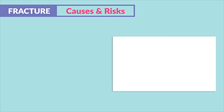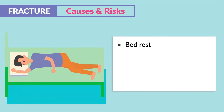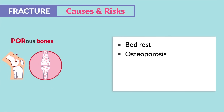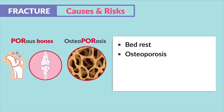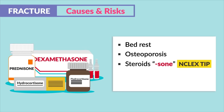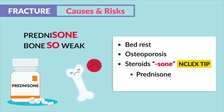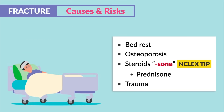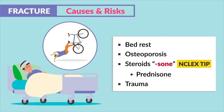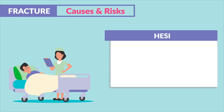For causes and risks of fractures, write this one down. Bed rest as well as osteoporosis, where the bones become very weak and porous. A big one here is steroids ending in -sone — huge NCLEX tip — like prednisone. Just think that the '-zones' make the bones so weak.